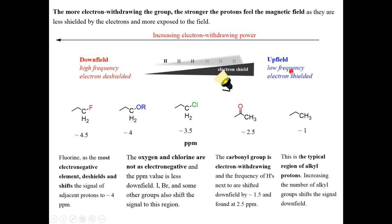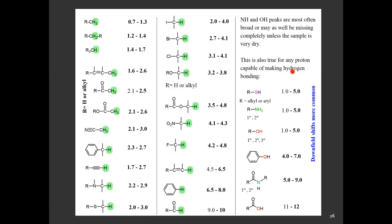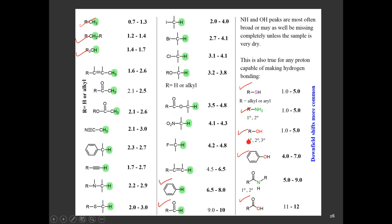When the signal goes to the left, it is deshielded or downfield. When the signal goes to the right, it is shielded or upfield. There are certain values you need to learn for NMR. The most important ones include values for CH3, CH2, and CH groups, and also values for RSH, ROH, RNH2, benzene ring protons, aldehyde protons, and carboxylic acid protons. These are important values for interpreting NMR signals.